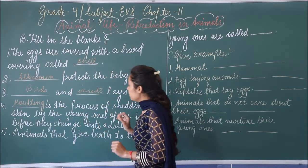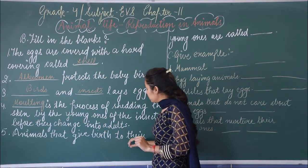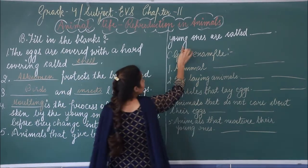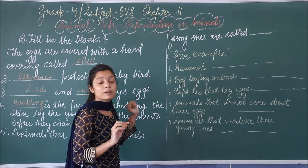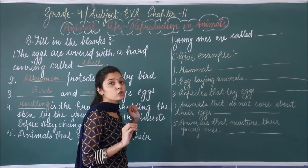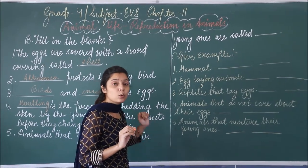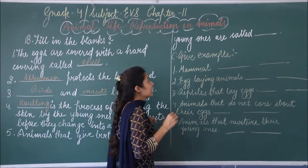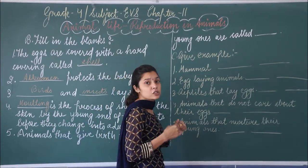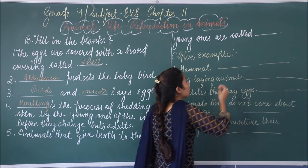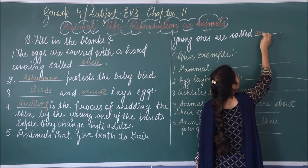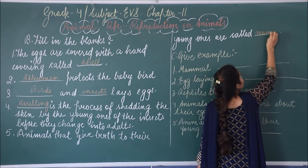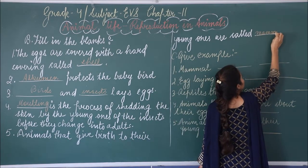Fifth: animals that give birth to their young ones — unh animals ko hum kya kehte hai jo apne young ones ko directly birth deti hai, janam deti hai? Those animals are called mammals.